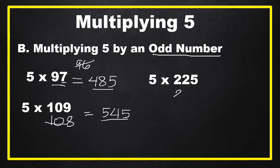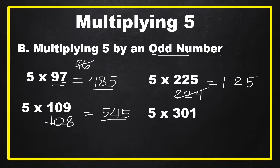Another example: five times 225. Subtract 1 from 225 to get 224. Get one half of 224, which is 112. Then put 5 at the right side, giving us an answer of 1,125.